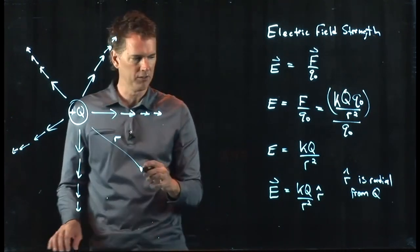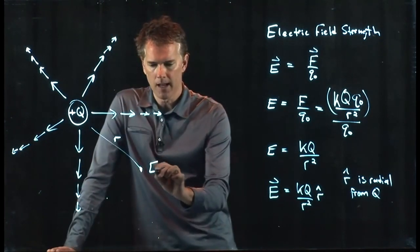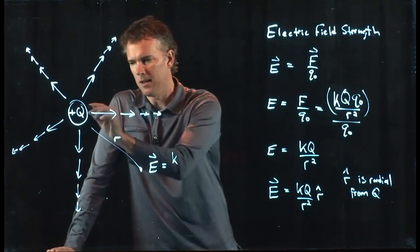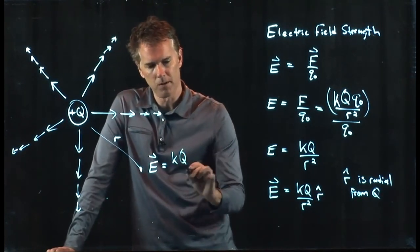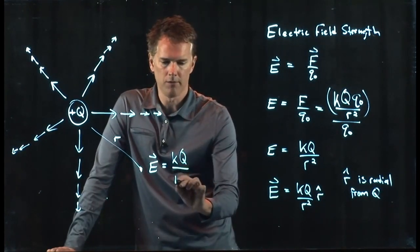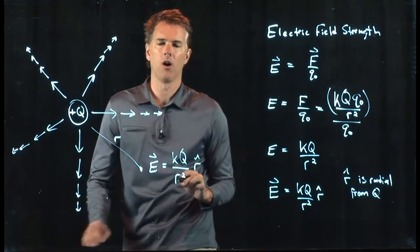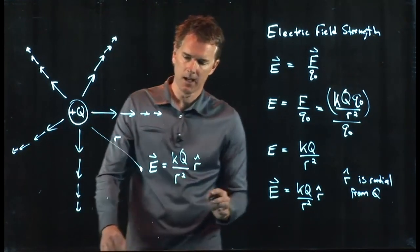So the electric field at this point still exists and that electric field is going to be K times the charge, which we said was capital Q, divided by R squared, and the direction is R hat radially outward. So we draw it with an arrow right there.